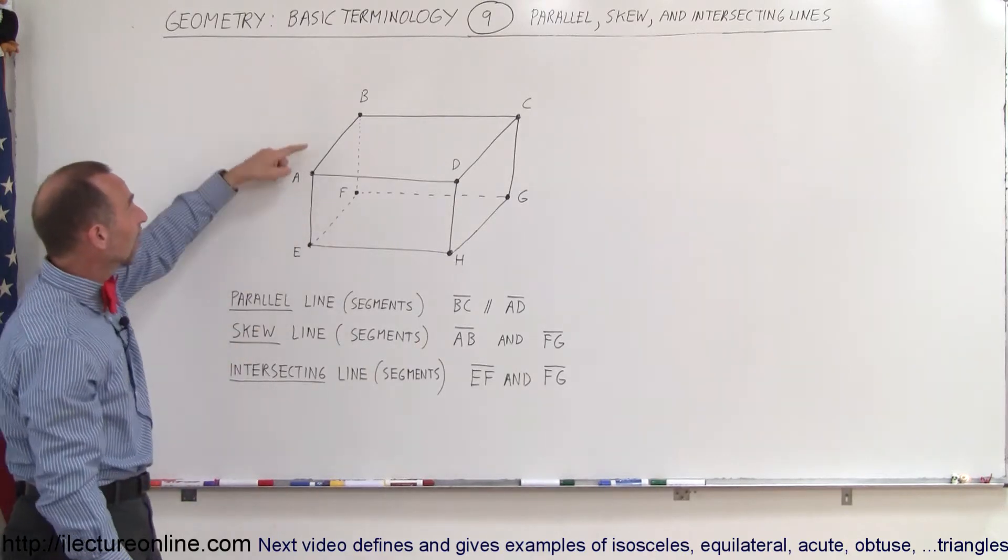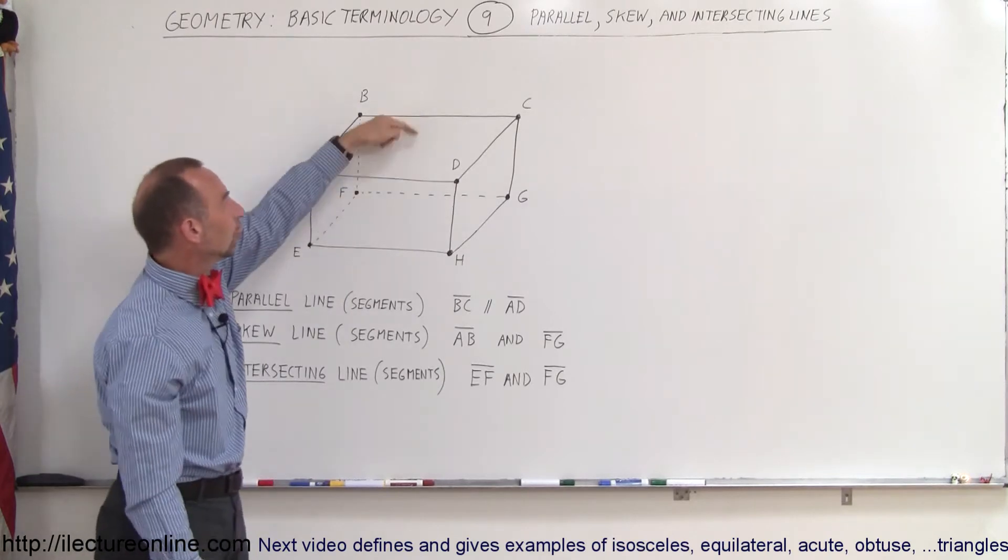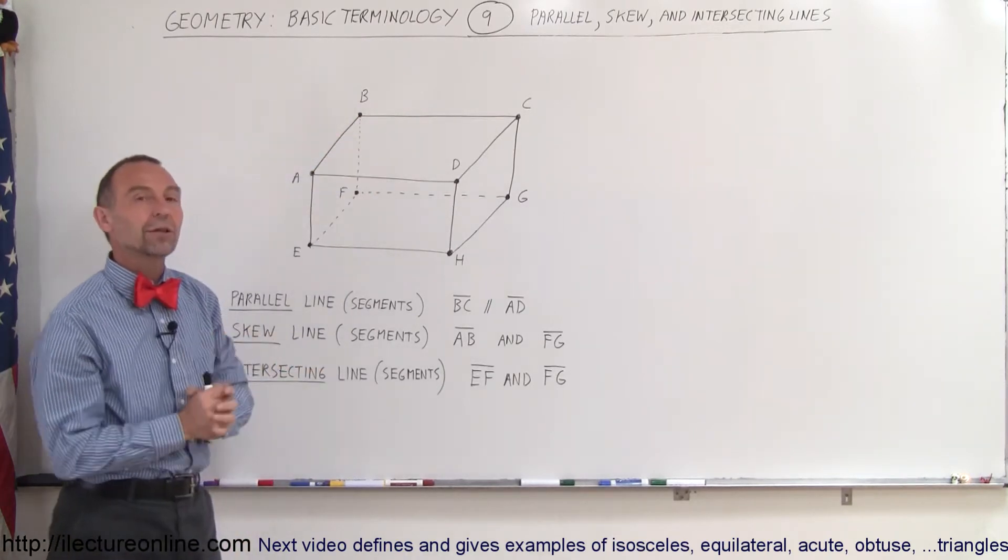So in this case, we have an example: B to C and A to D are parallel to one another.